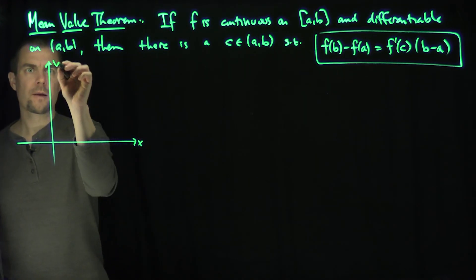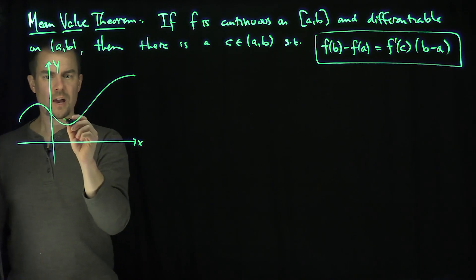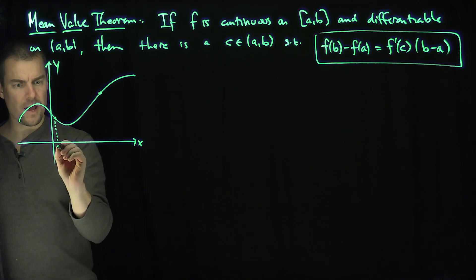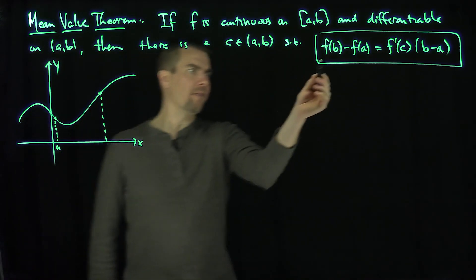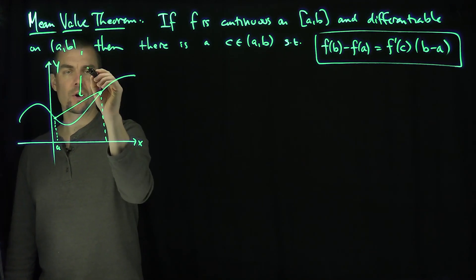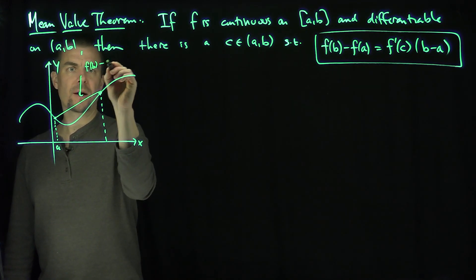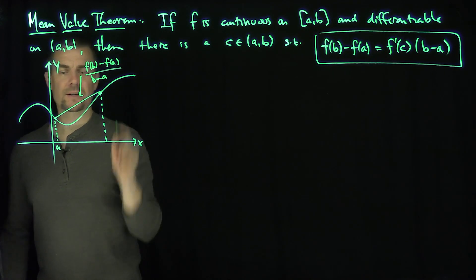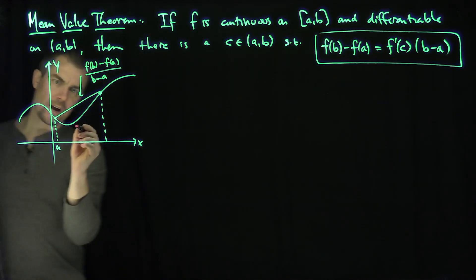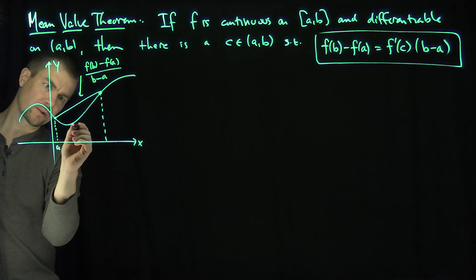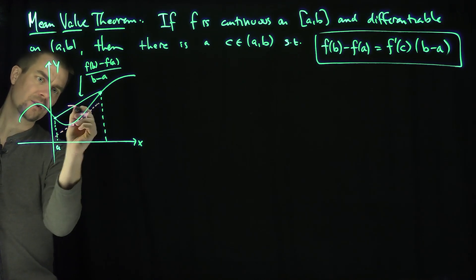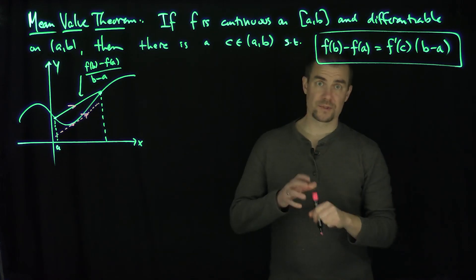Here's x and here's y. Here's your function. I'm going to pick that point from my a over there — there's my a, there's my b. And f of b minus f of a over b minus a is just the slope of the secant line. So that line has slope f of b minus f of a, the change in y over the change in x. What the Mean Value Theorem says is that there has to be some point in between a and b where the slope of the tangent line is the same as the slope of the secant line.